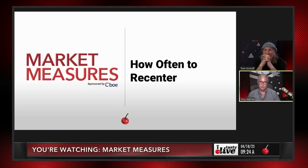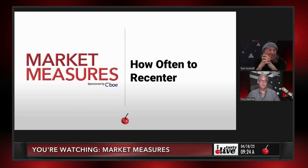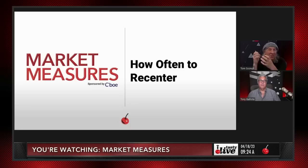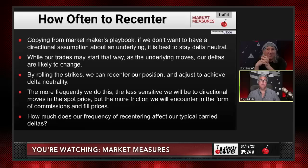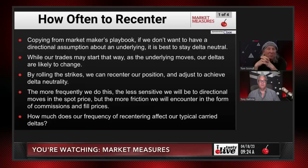Recentering is like buying the guts and selling the wings — it's just normalizing your delta. We decided to look at this because we get a lot of questions. I do it often on highly volatile stocks, less often on lower-volatility names. For larger accounts it's more cost-effective to recenter than for smaller accounts, where commissions are a higher percentage. Copying from the market maker's playbook: if we don't want a directional assumption, it's best to stay delta neutral. As the underlying moves our deltas change, and by rolling the strikes we can recenter our position.